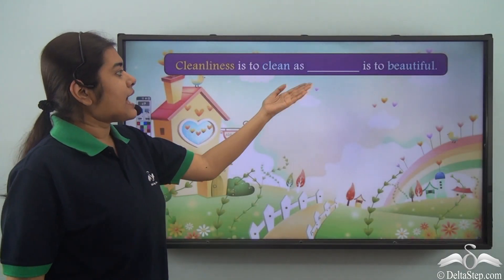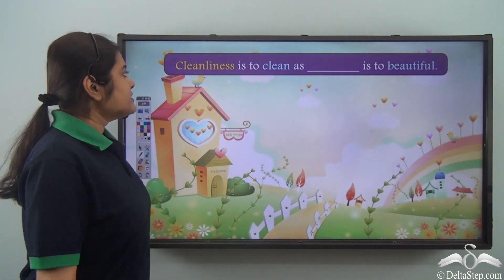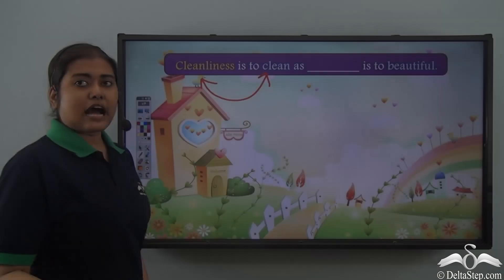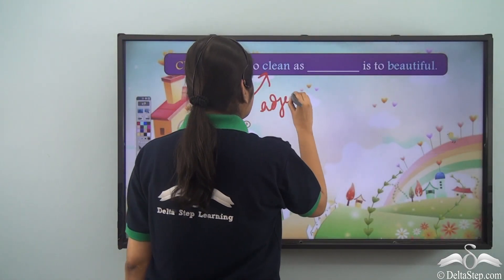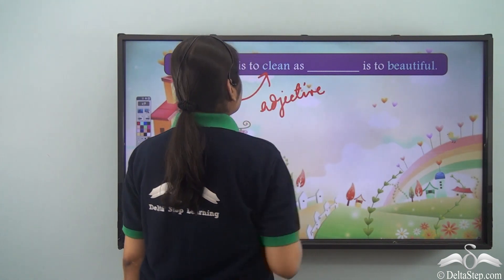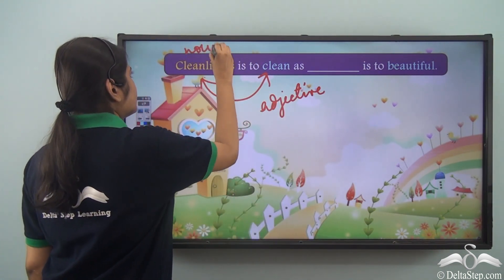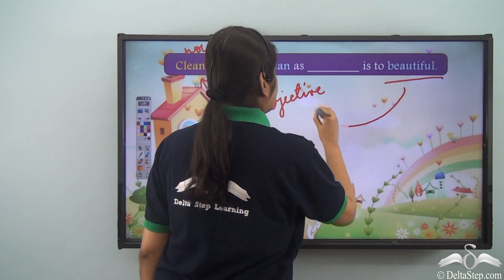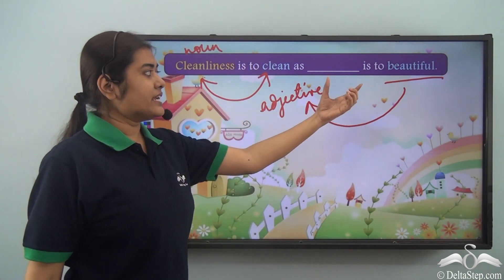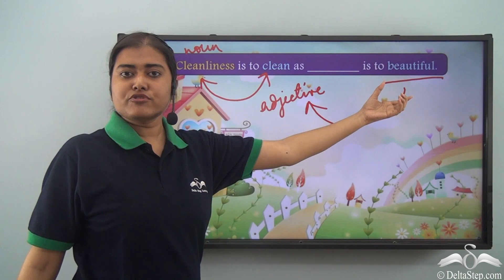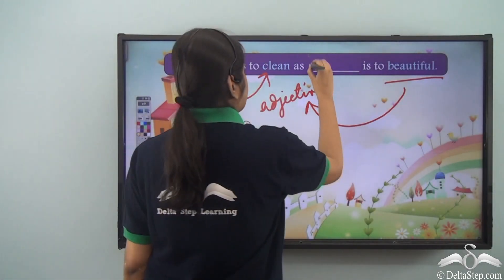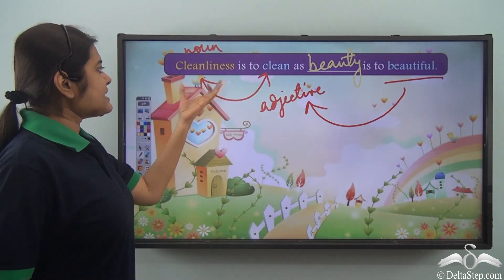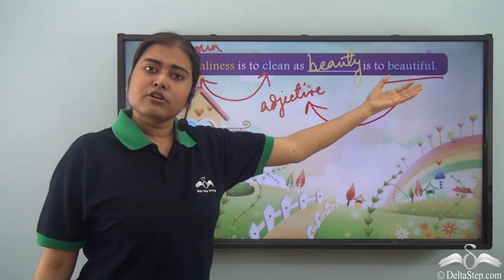Cleanliness is to clean as dash is to beautiful. Look at cleanliness and clean — if clean is the adjective, then cleanliness is the noun. Similarly, beautiful is an adjective, so we need the noun form of beautiful, which is beauty. So: cleanliness is to clean as beauty is to beautiful.